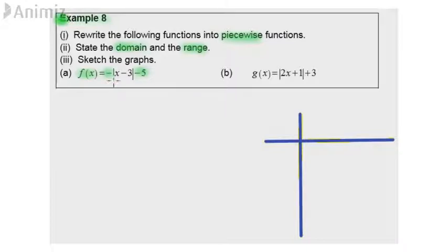First of all, we focus on modulus x minus 3. Rewrite this modulus function into piecewise function. It has positive part x minus 3, this is for x minus 3 greater or equal 0, and negative part -(x minus 3), this is for x minus 3 less than 0.